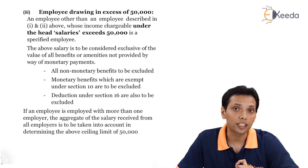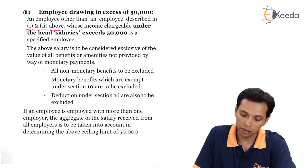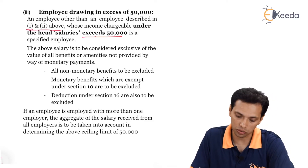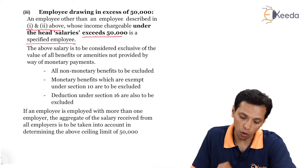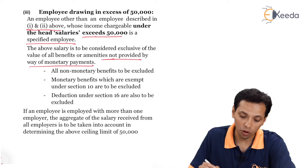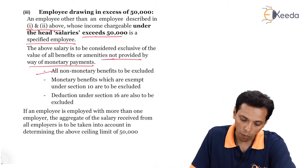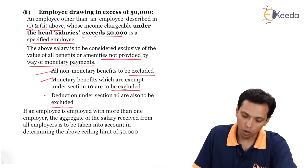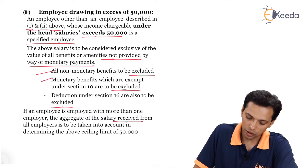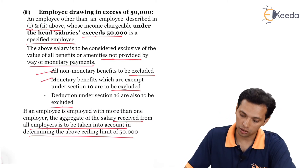The third category is an employee drawing in excess of 50,000 INR. An employee, other than one described in categories one and two above, whose income chargeable under the head Salaries exceeds 50,000, is a specified employee. The above salary is to be considered exclusively of the value of all benefits or amenities not provided by way of monetary payments, meaning all non-monetary benefits are to be excluded. Monetary benefits exempt under Section 10 are to be excluded. Deductions under Section 16 are also to be excluded. If an employee is employed with more than one employer, the aggregate salary received from all employers is taken into account for determining the ceiling limit of 50,000.